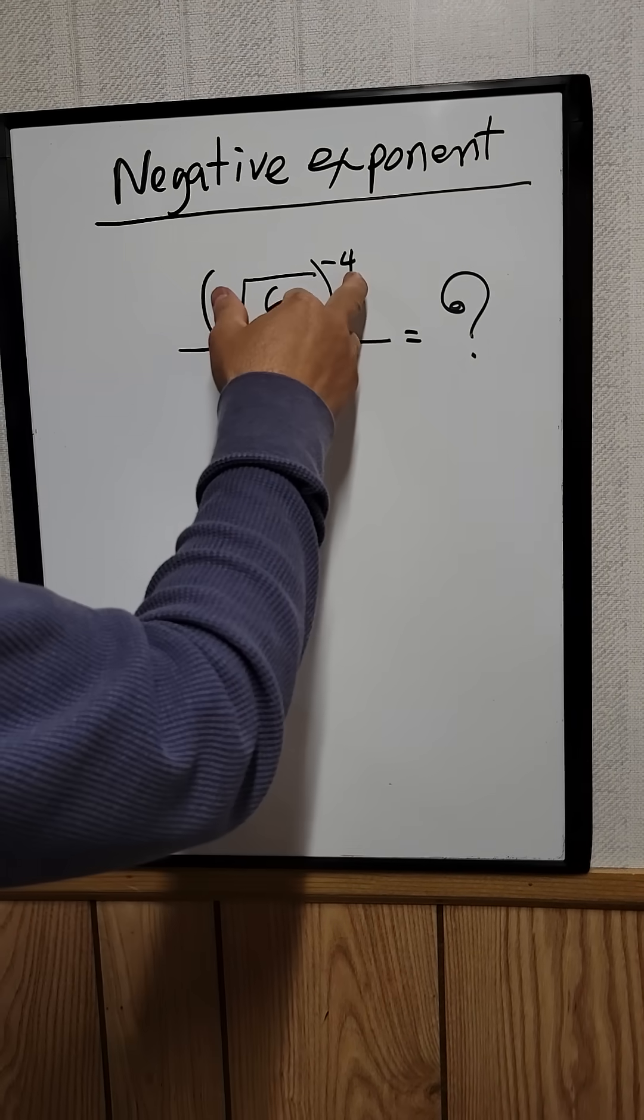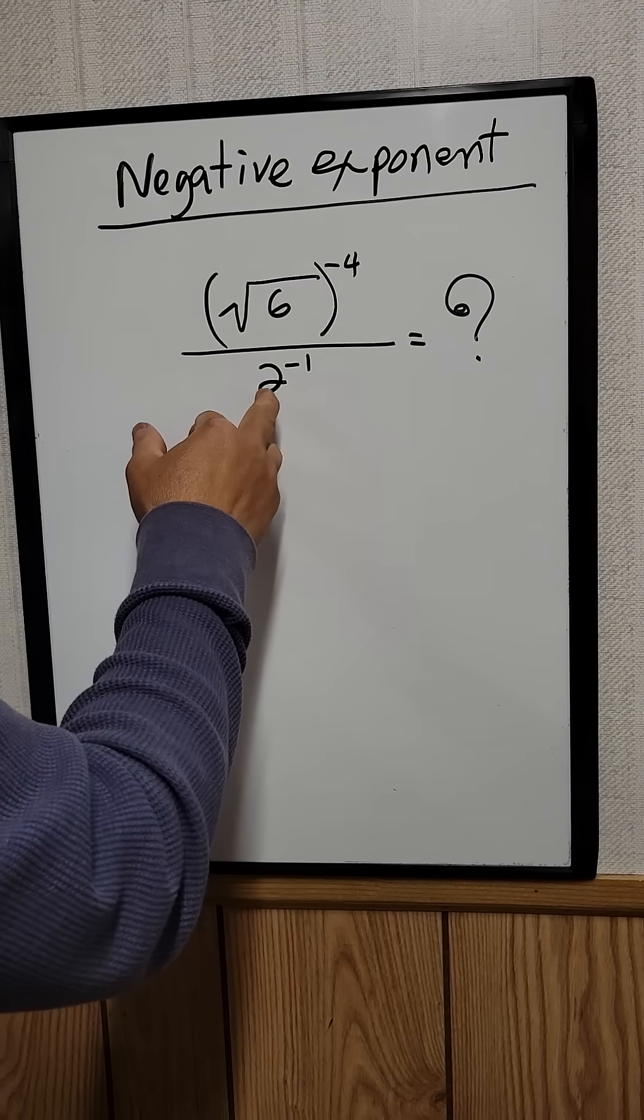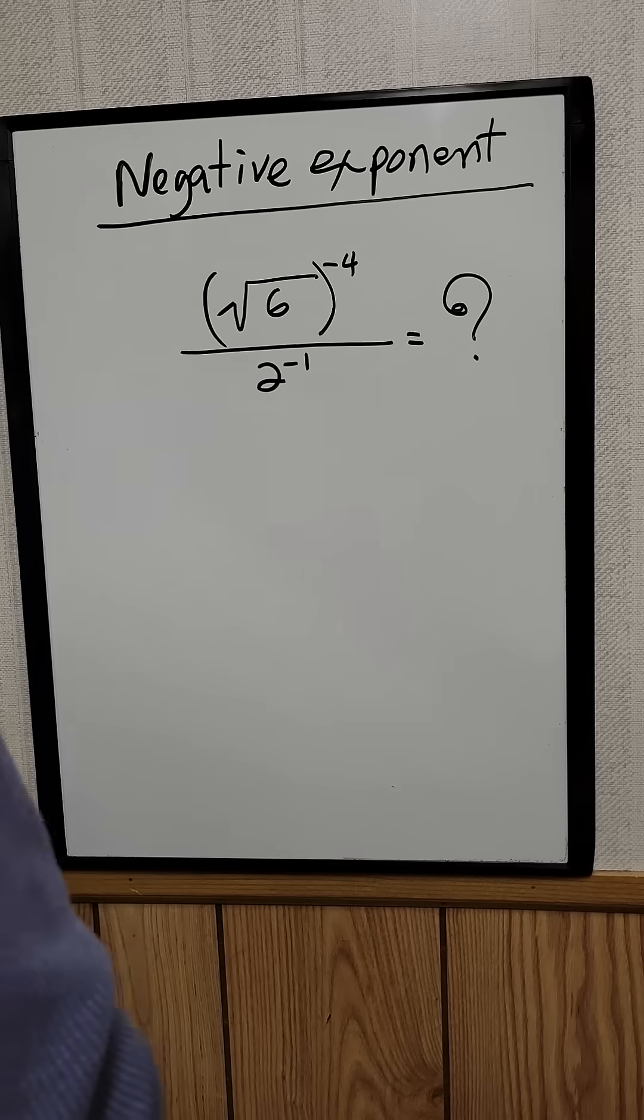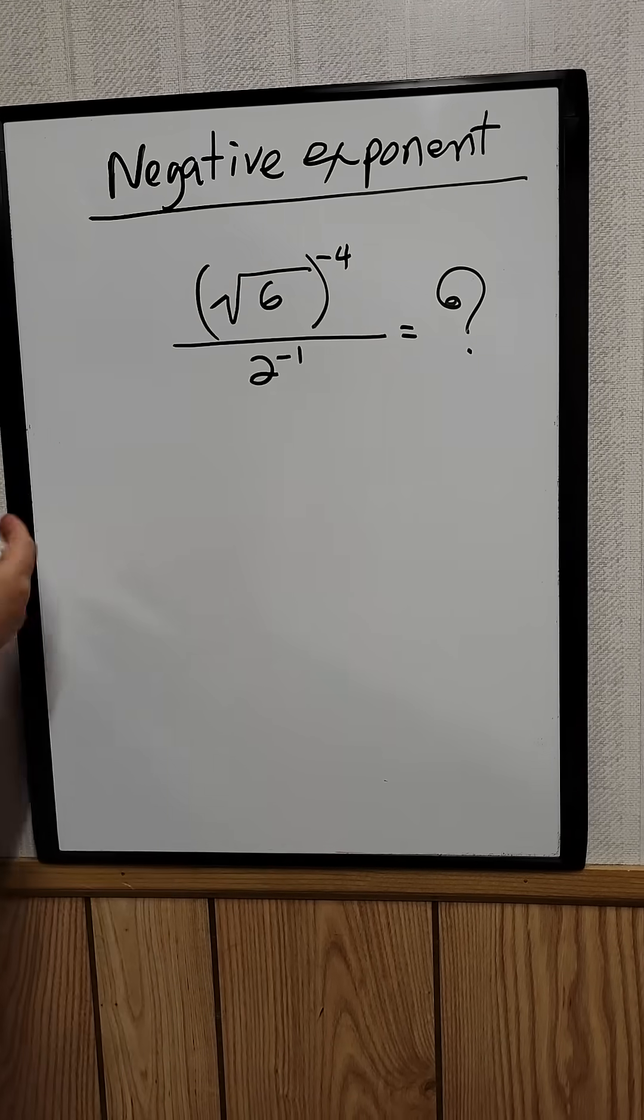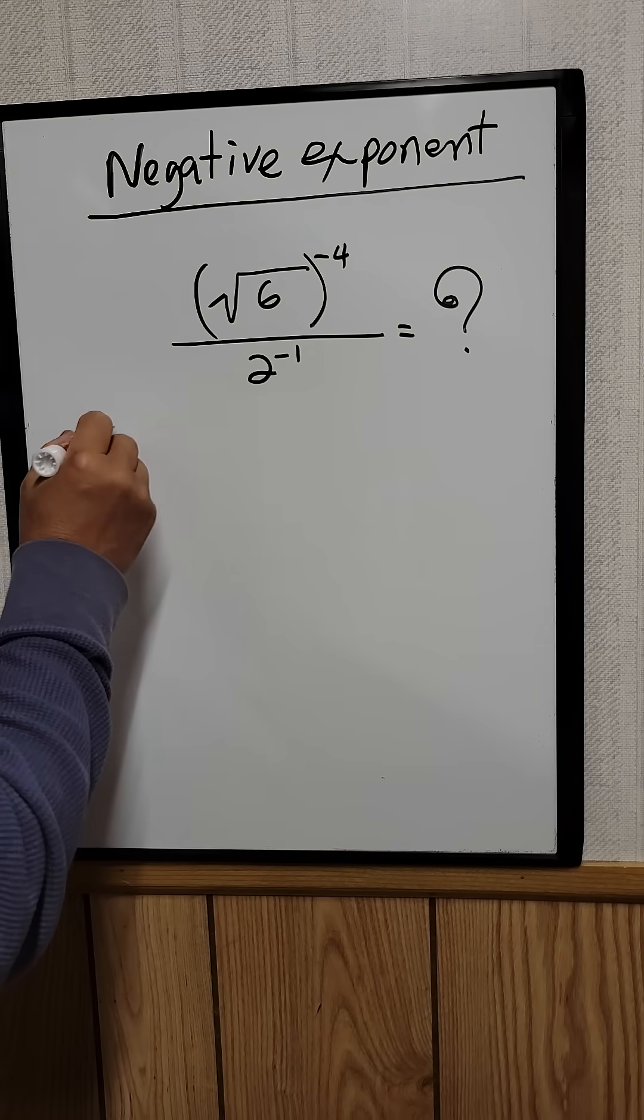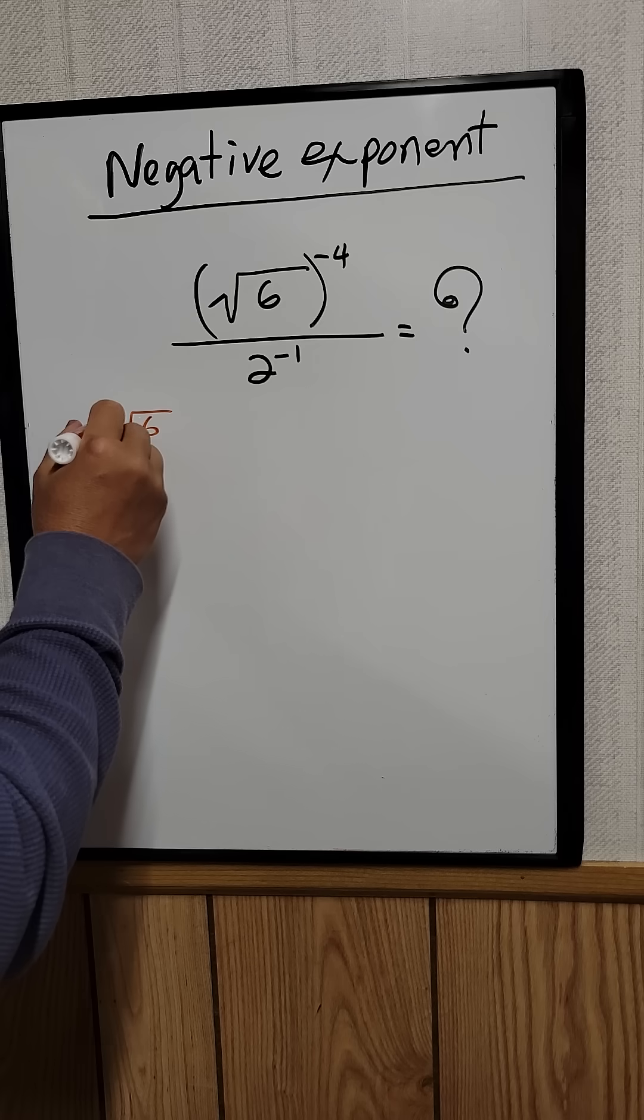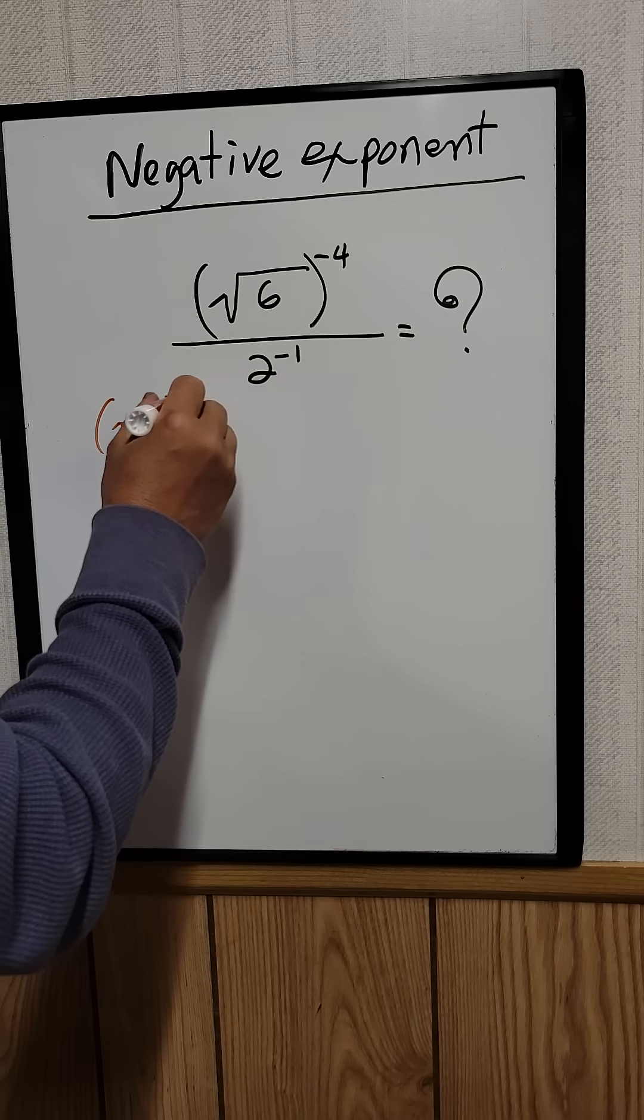The square root of 6 raised to the negative 4, divided by 2 raised to the negative 1. Let's work with the numerator first. So the square root of 6 raised to the negative 4.